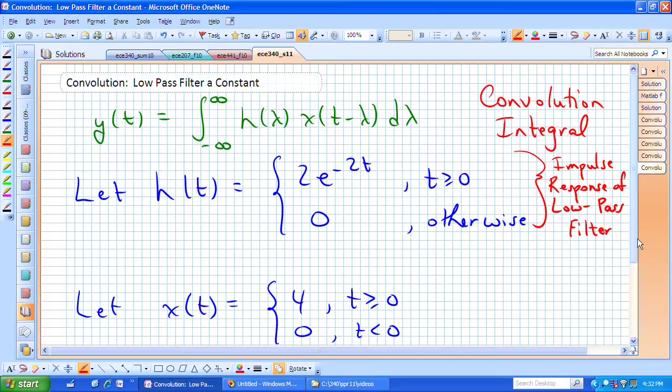We start with the convolution integral, as always, and our impulse response is this damped exponential, which you can think of as the impulse response of a low-pass filter.